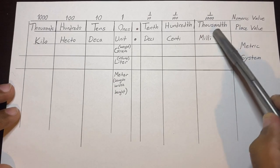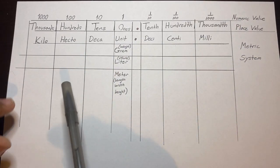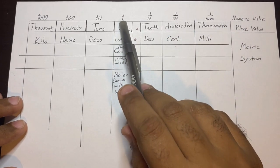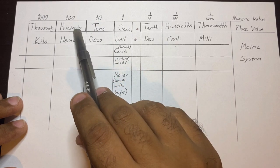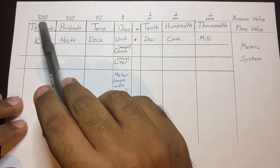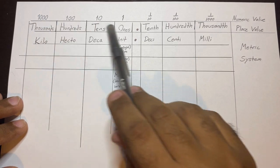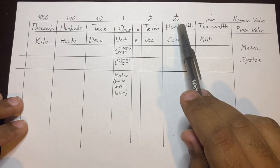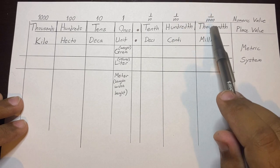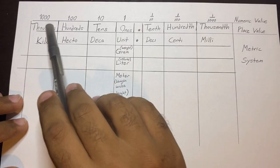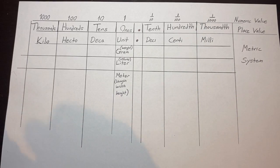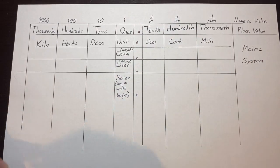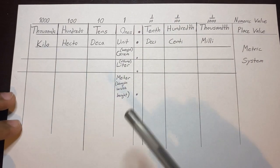Now you're wondering about these numeric values at the top — they go along with the place value. In the ones unit we have the ones place, tens place, hundreds place, thousands place. On the right side of the decimal we have the tenth, which is one over ten; hundredth, which is one over a hundred; and thousandth, which is one over a thousand. These are the place values and numeric values people should be aware of.